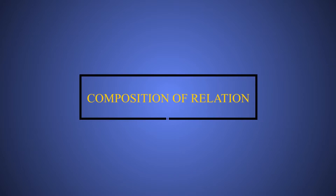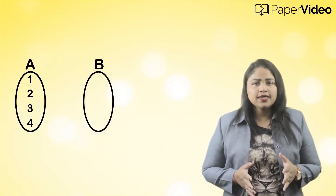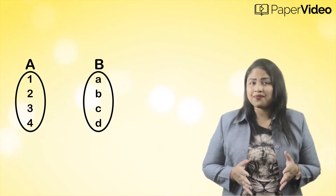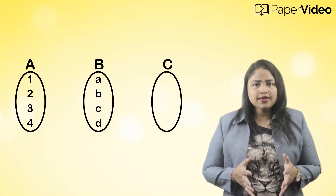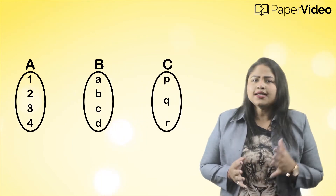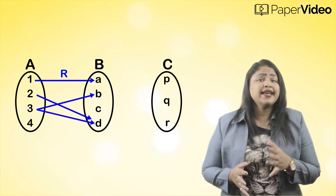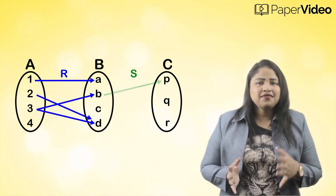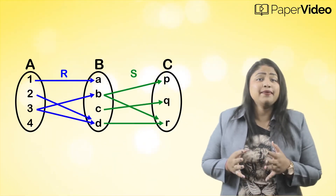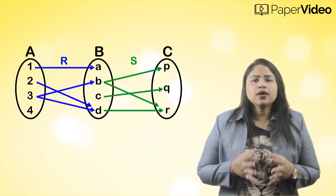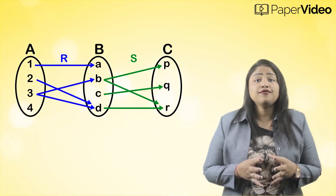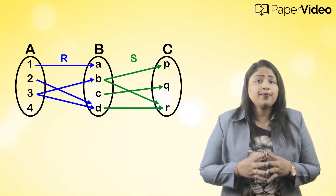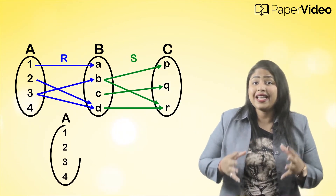Consider set A having elements 1, 2, 3, and 4; set B having elements A, B, C, and D; and set C having elements P, Q, and R. Let us define a relation R from set A to set B, and a relation S from set B to set C. Now look at the arrow diagram carefully and form another arrow diagram to represent the relation from set A to set C.